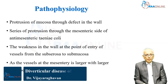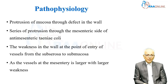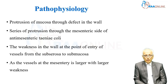What is the pathophysiology? This is a protrusion of the mucosa through the defect in the wall of the gut — the classical reason for diverticular disease. These are pseudo-diverticula because they do not have all four layers of the intestine. There is serial protrusion through the mesenteric side of the anti-mesenteric taenia coli, at the weaknesses in the wall at the point of entry of vessels from the subserosa to the submucosa. Those entry points are the weakness through which, when there is increased intraluminal pressure, the mucosa tends to herniate out.